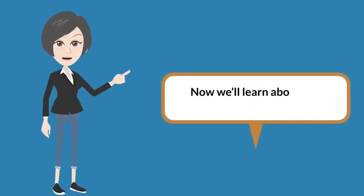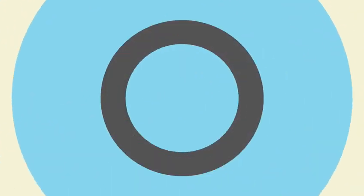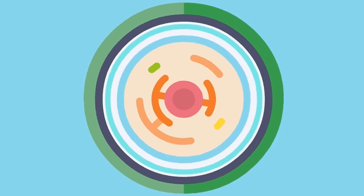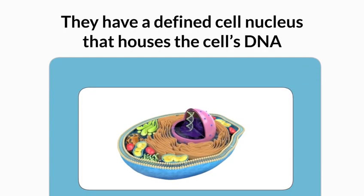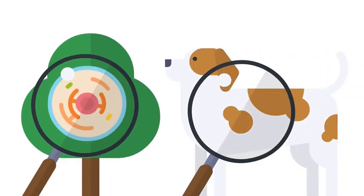Now we will learn about the eukaryotic cells. These are typically a lot bigger in size and more complex than prokaryotic cells. They have a defined cell nucleus that houses the cell's DNA. These are the types of cells we find in plants and animals.